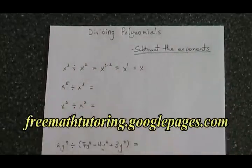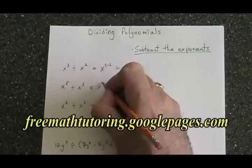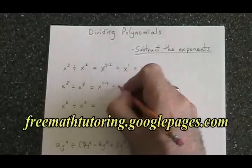Here we have x to the 5 divided by x to the 3. That's equal to x to the 5 minus 3, which is equal to x squared.